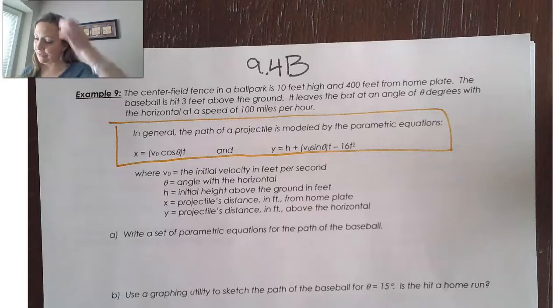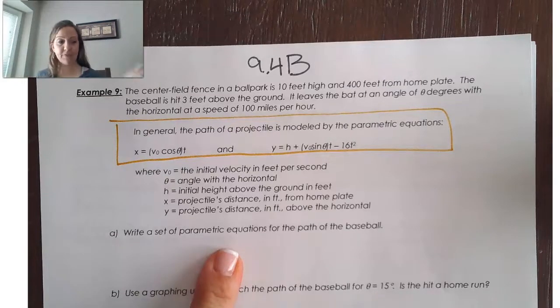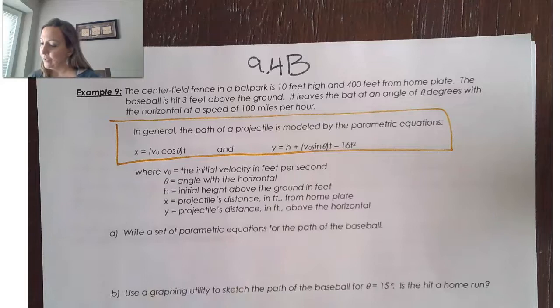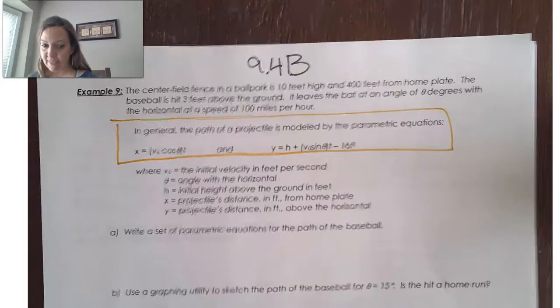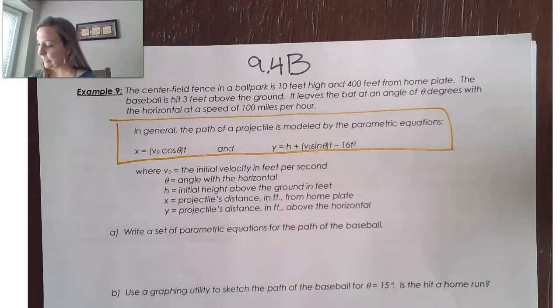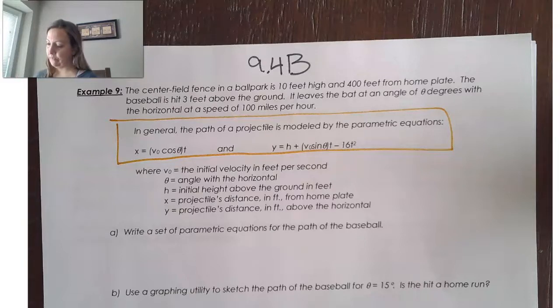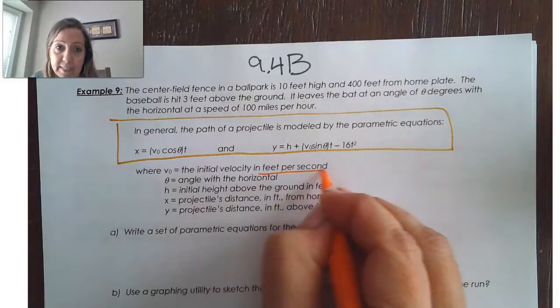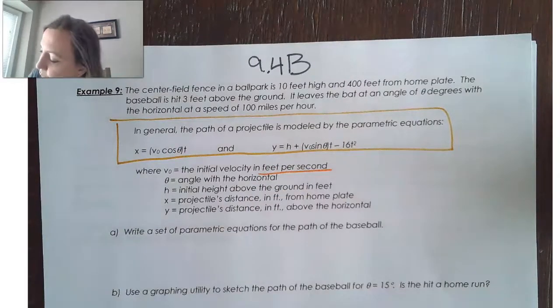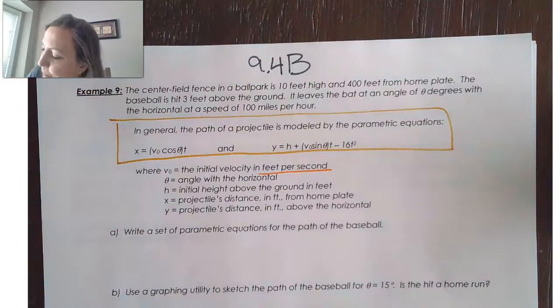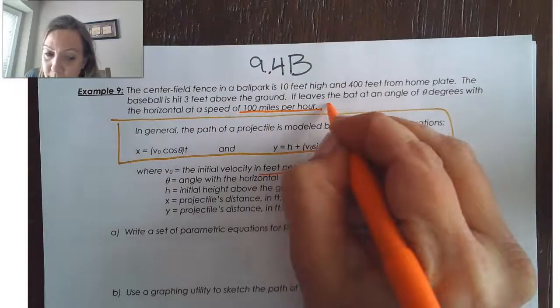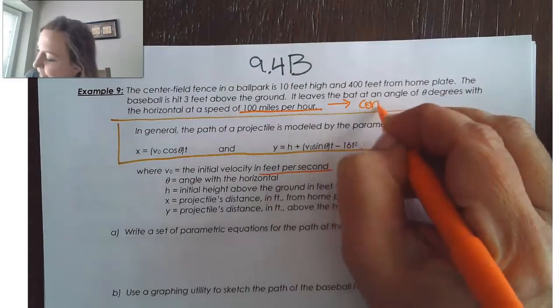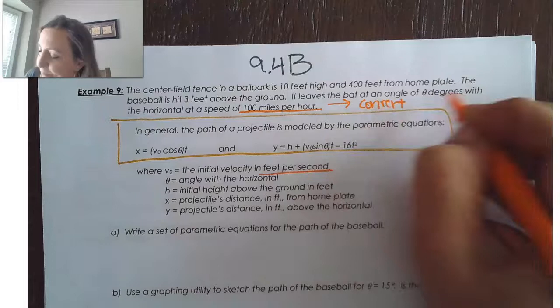So, let's try to write a set of parametric equations for the path of the baseball. One thing that we're going to need to find is the V sub 0. That's in both of the equations. Notice that the velocity is in feet per second, and they tell us that this is in miles per hour. So, we're going to want to convert this to feet per second.